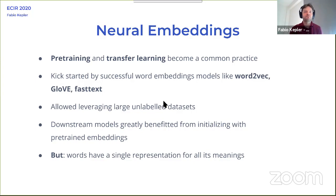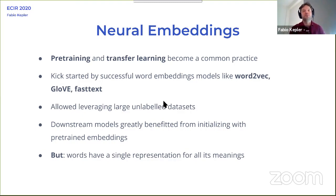But the main drawback is that all instances of a given word have a single representation. We know that due to natural ambiguity in language, a given word can have several meanings depending on where it appears. By using these word embeddings, although you use the context to learn them, you don't really use the context when you use them in your model. So you lose the different meanings — for example, the classic example of the word 'bank'.